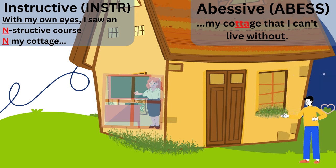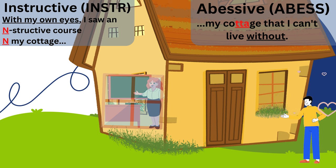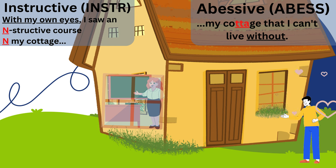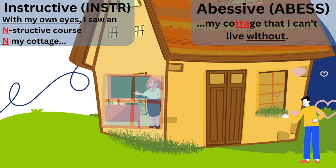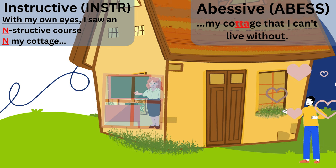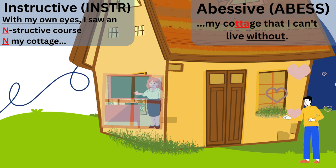The next case in our mnemonic is the instructive case. Its basic meaning is 'by means of.' One common phrase you'll see it in is 'with my own eyes.' So with my own eyes I saw an instructive course in my cottage. The case ending is -n. This case is also relatively rare; however, it does appear in some common phrases such as the one we discussed.